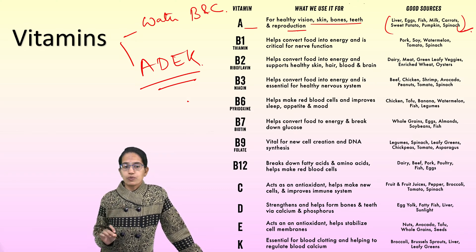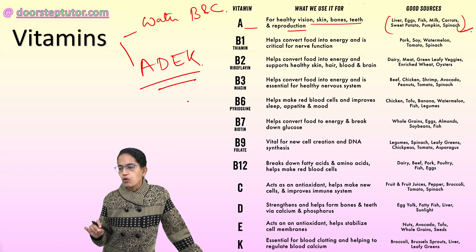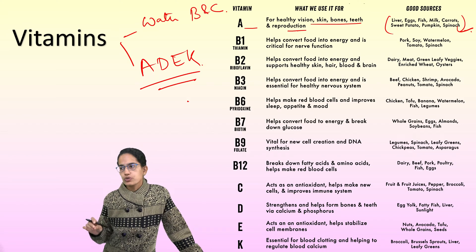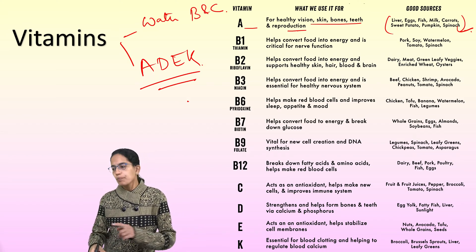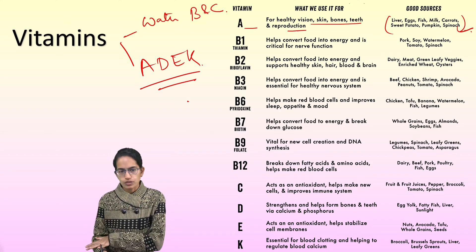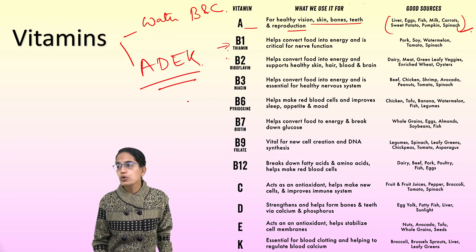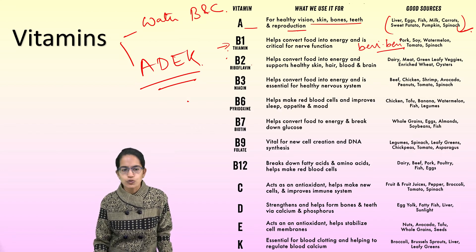An important point: deficiency of vitamin A can lead to night blindness. However, excess of vitamin A can also lead to disorders in the form of nausea, headache, drowsiness, peeling of the skin, and swelling of the long bones. Vitamin B1 is thiamine, also known as antineuritic. Its deficiency causes beriberi disease, leading to loss of appetite and cessation of growth.